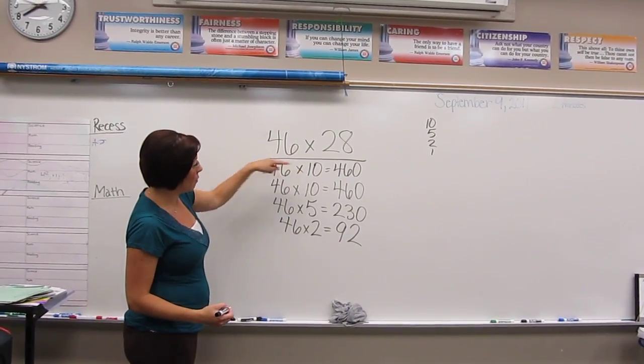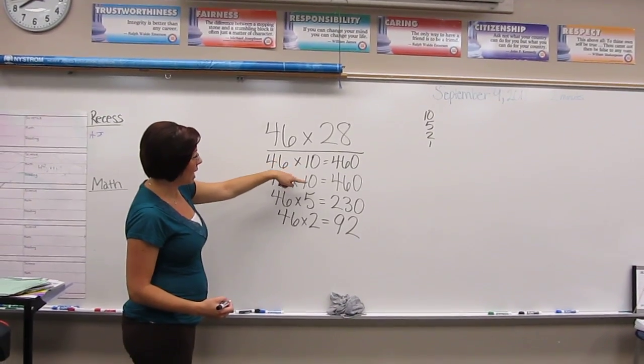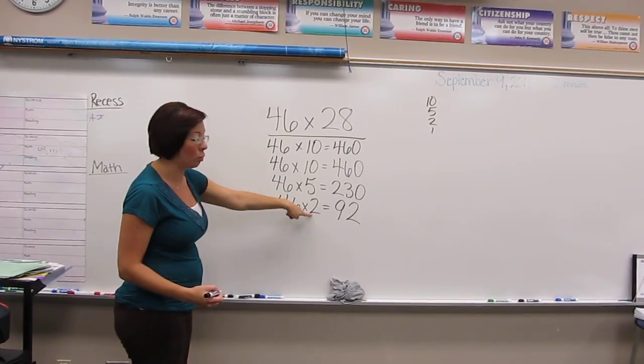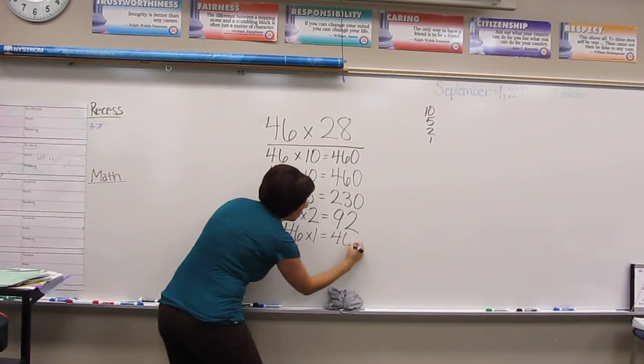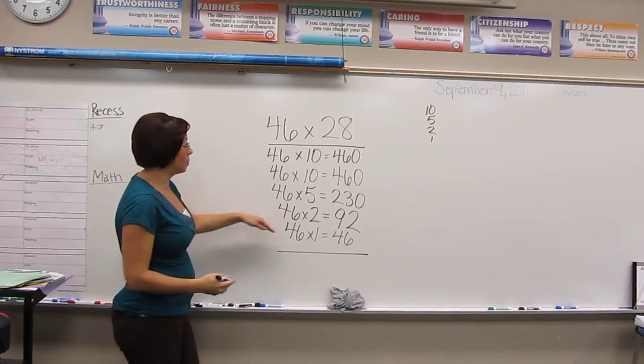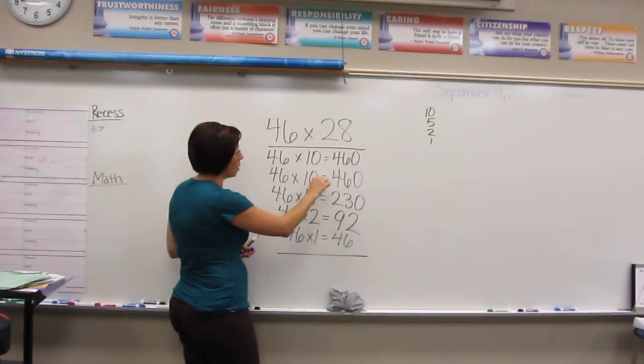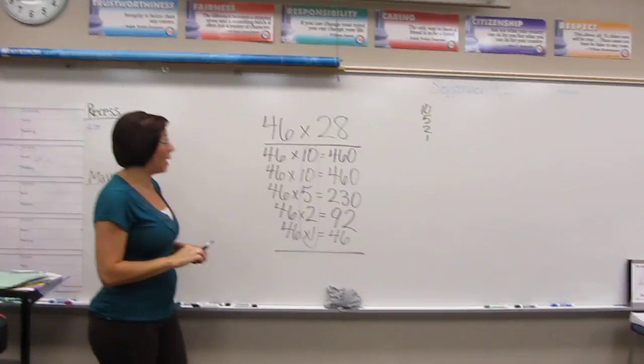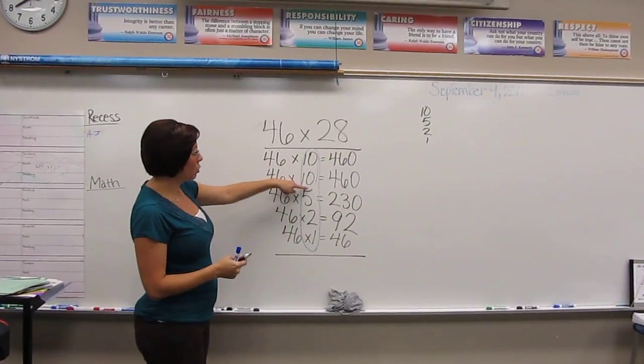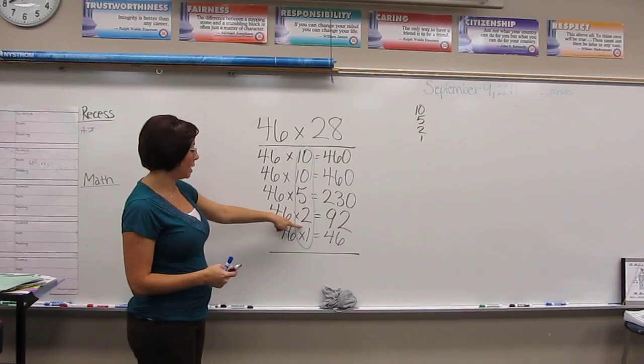And if I look here, I've now multiplied 46 times 10, 20, 25, 27. Now I just need to multiply these together. If I look at this column right here, that should all add up to 28: 10, 20, 25, 27, 28.